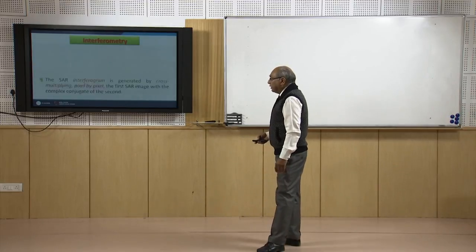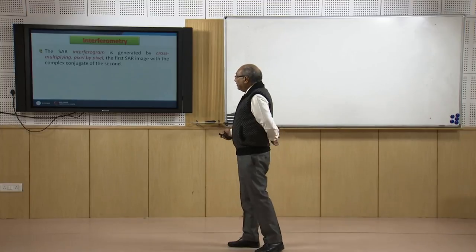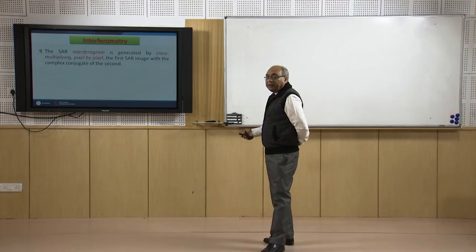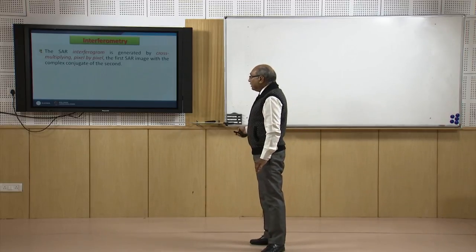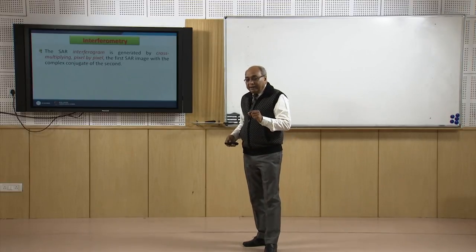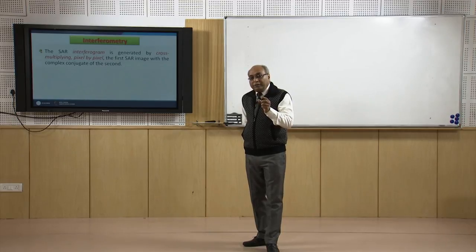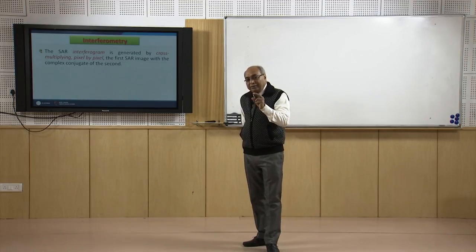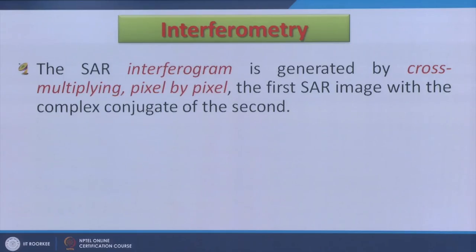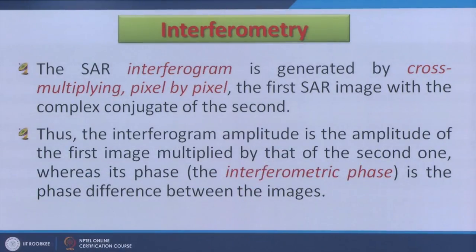Ground deformations induced by an earthquake, flooding, landslide, subsidence, or other reasons can be measured very accurately. The perpendicular baseline is very important for deformation studies. An SAR interferogram is generated by cross-multiplying pixel by pixel the first SAR image with the complex conjugate of the second. The interferometric amplitude is the amplitude of the first image multiplied by that of the second, whereas the interferometric phase is the phase difference between the images — and that phase difference gives the deformation information.